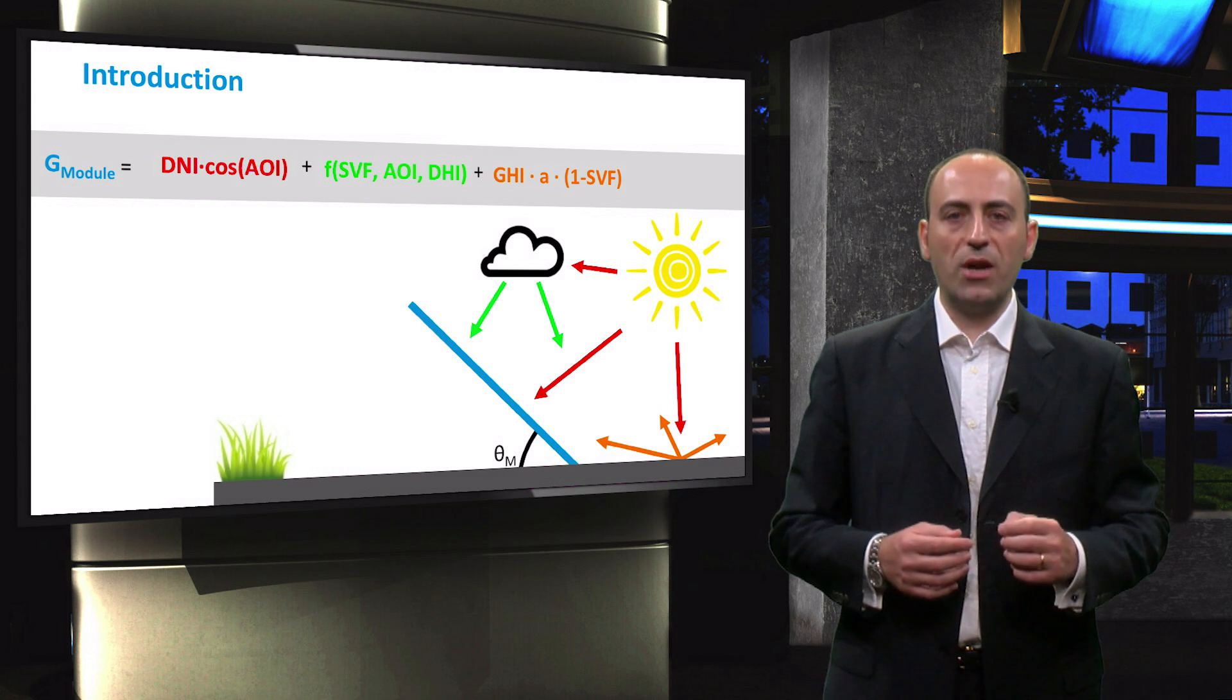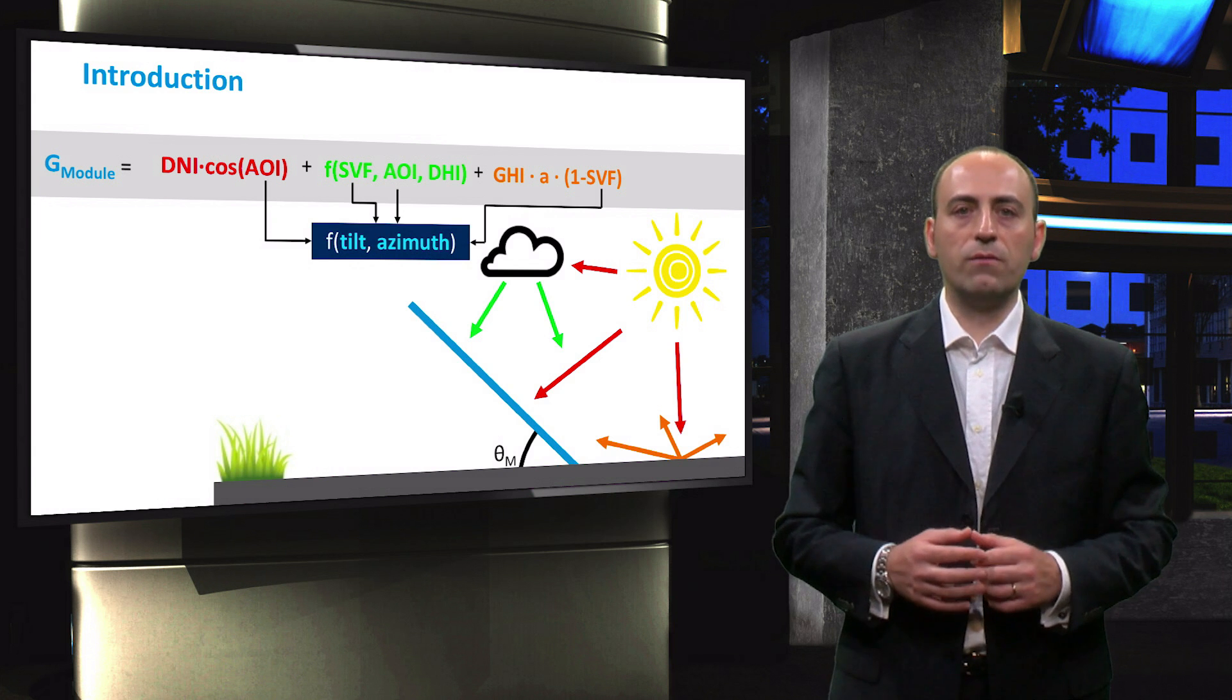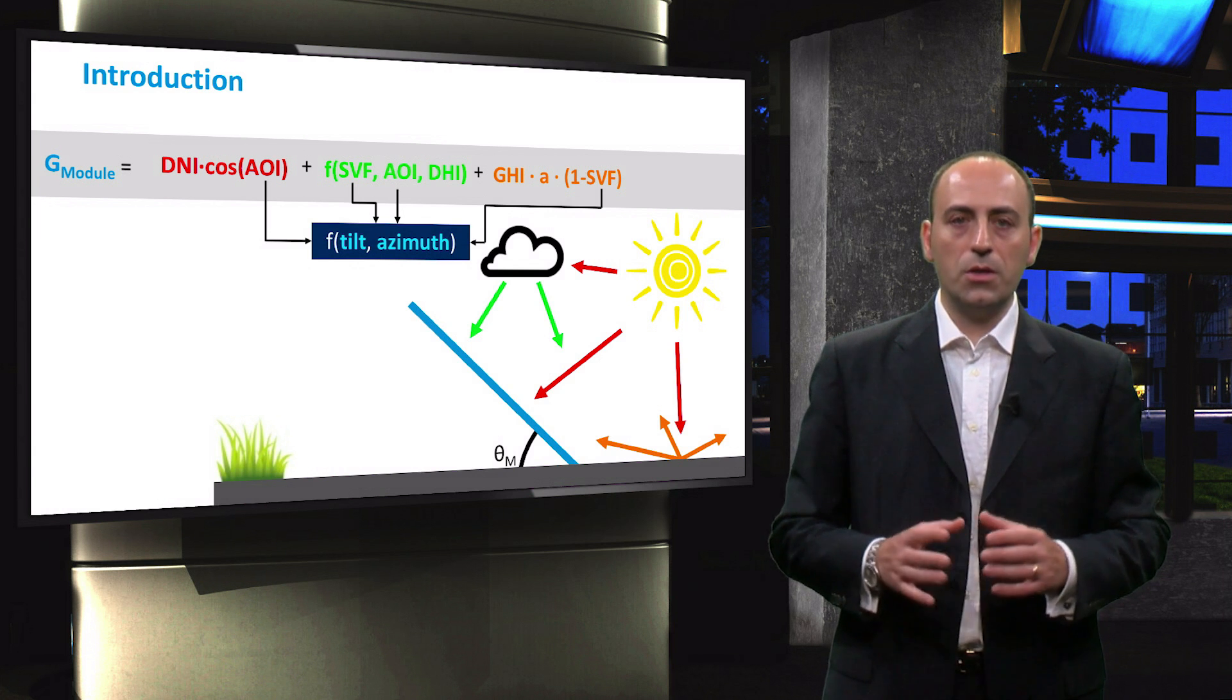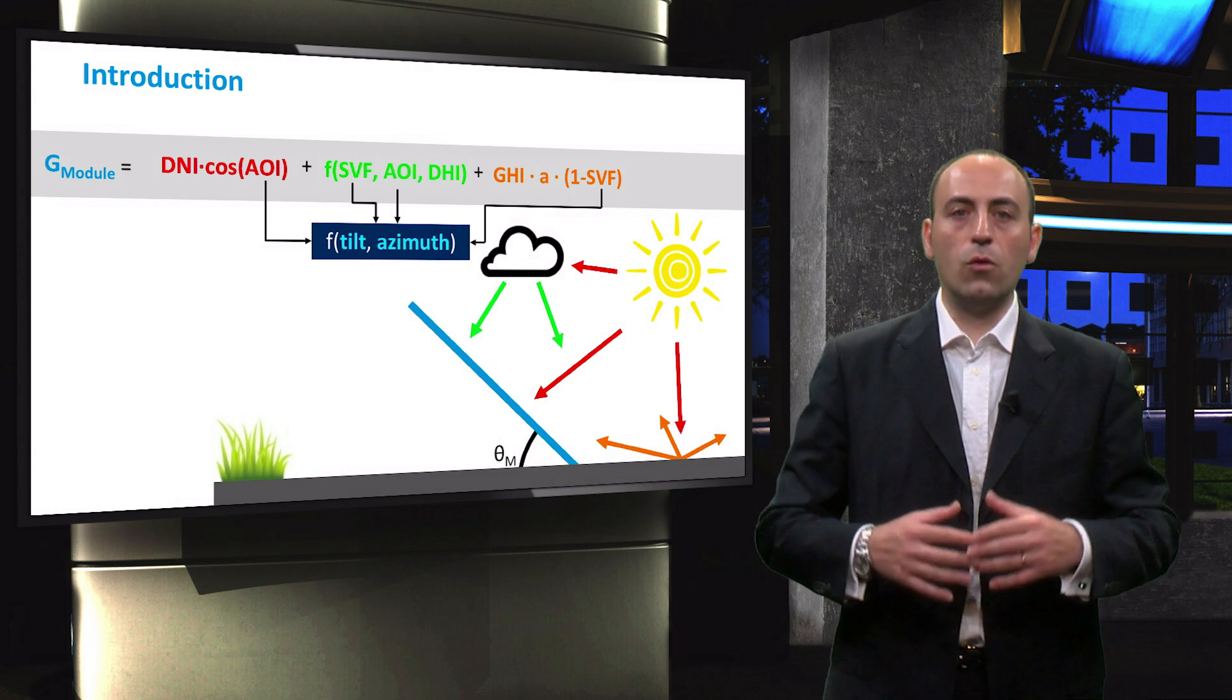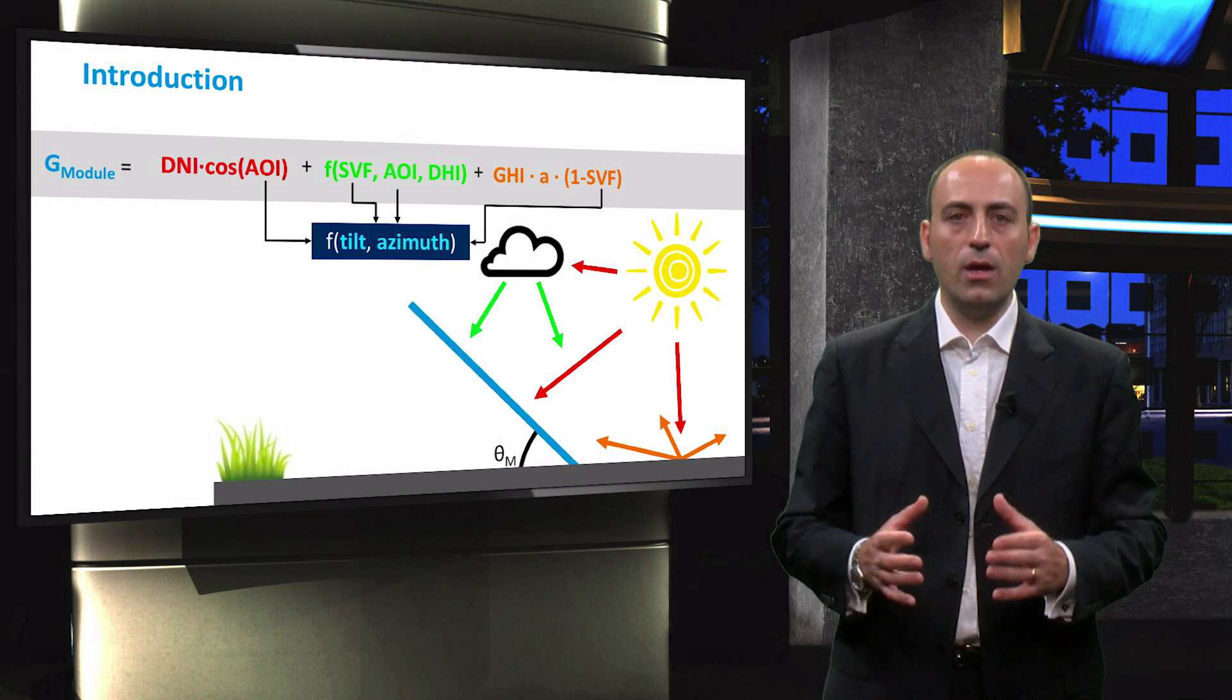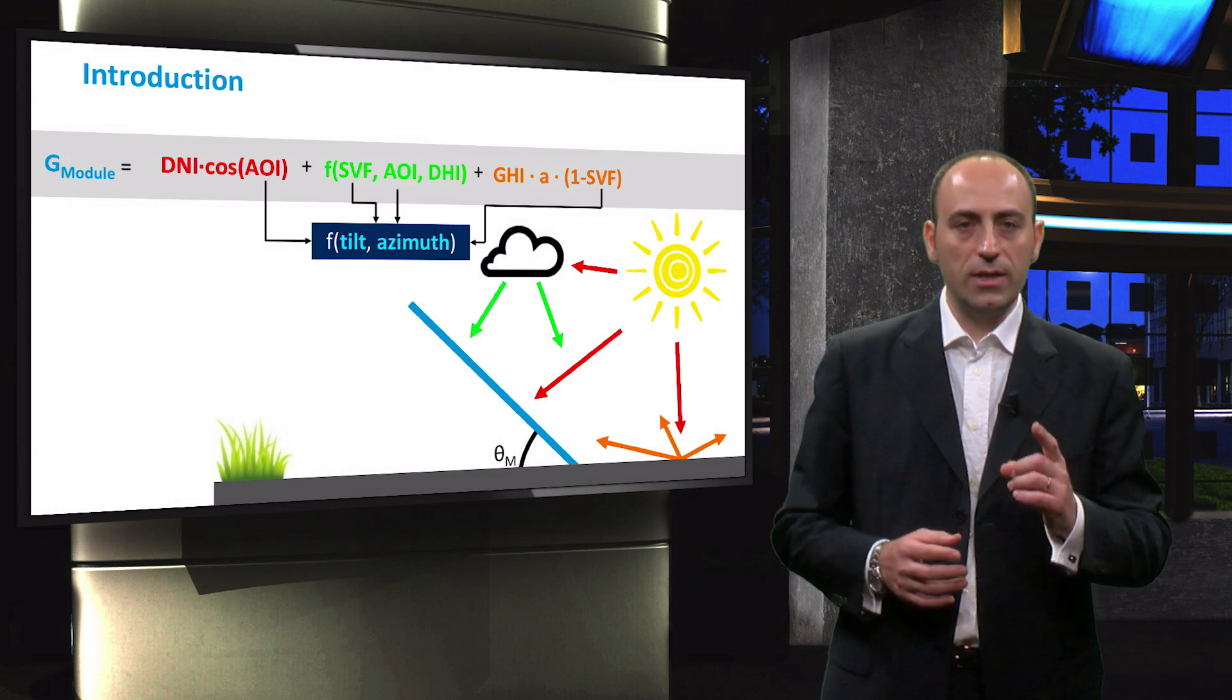We derived the expressions for these components as a function of the tilt and azimuth angle of the PV module. So now the goal is to find out for which module tilt and azimuth the annual irradiation on the module is maximized.